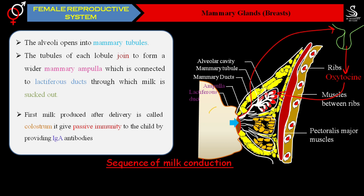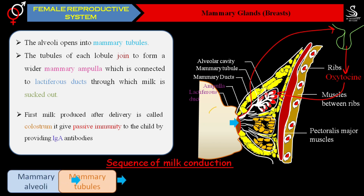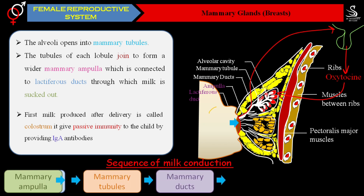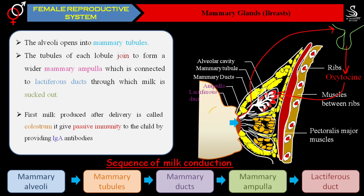The sequence of milk conduction is as follows: milk is produced in the mammary alveoli, collected into the mammary cavities, then conducted through primary and secondary mammary tubules, which join to form mammary ducts. The mammary ducts lead into a small enlarged area, the ampulla, which connects to the lactiferous ducts, and the lactiferous ducts open at the tip of the nipple.